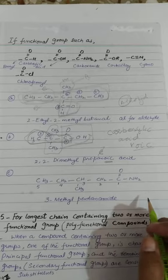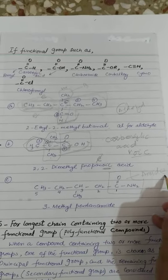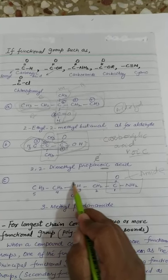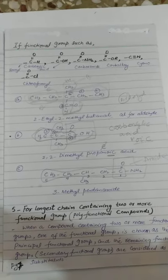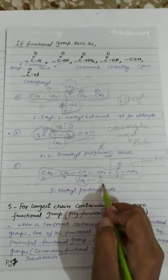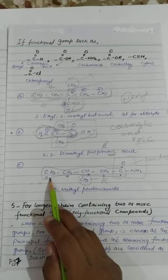Next example देखते हैं। Next example में functional group सबसे पहले हम check करेंगे — functional group यहां पर amide group है। यहां से हम numbering start करते हैं: carbon number 1, 2, 3, 4, 5 — longest carbon chain। अब आप यह देखिए कि carbon number 3 पे एक hydrogen substitute हुआ है एक methyl से। इसको क्या नाम देंगे? 3-methyl — क्योंकि three पे methyl group है। Total पांच carbon हैं, तो pentane — और amide group है, तो pentanamide। इस rule को आप सबने understand कर लिया होगा।